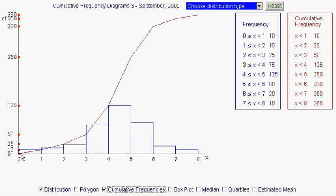We actually start at 0, because from here we can see that between 0 and 1 we have 10, but there's nothing which is less than 0, so we can start it at 0, go to 1 at 10, and then for the 2 point we plot 25, the 3 point we plot 50, the 4 point we plot 125, etc. Carry on until we get to the 360 plotted at the 8 point.